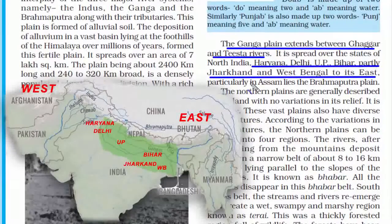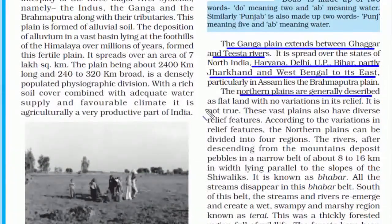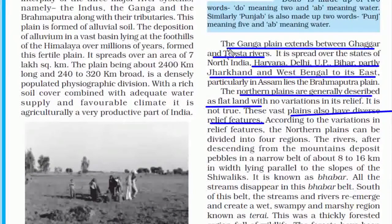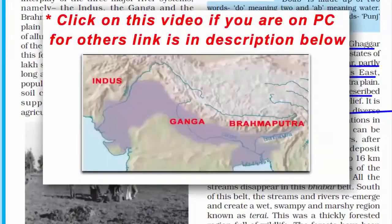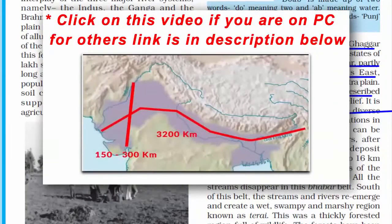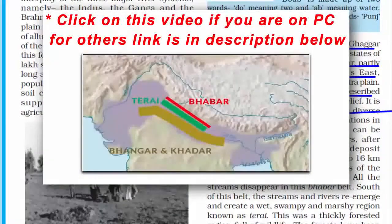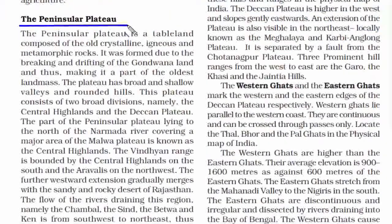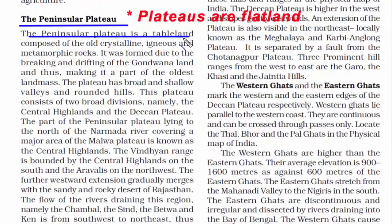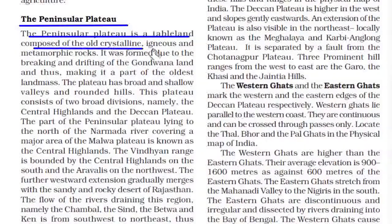The northern plains are generally described as flat land but have little variation in relief. The third major feature is the peninsular plateau — a tableland, meaning flat land. It is composed of old crystalline igneous and metamorphic rocks and is the oldest land block of the country, having been part of Gondwana land. The plateau is broadly divided into two categories: the Central Highlands and the Deccan Plateau.